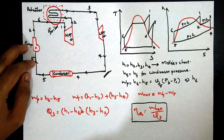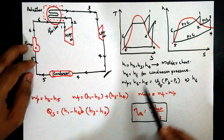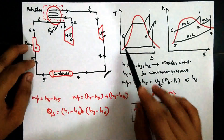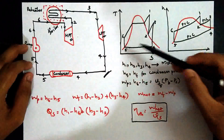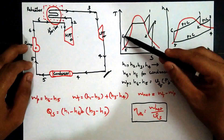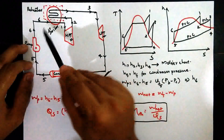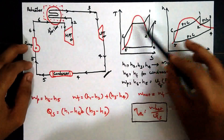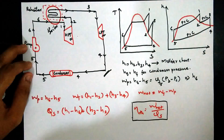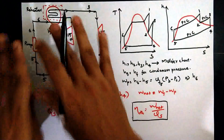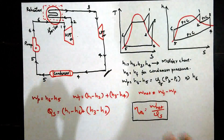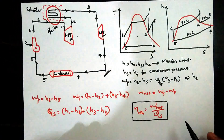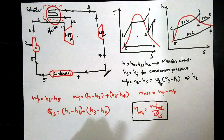Process 4 to 5 is condensation at constant pressure. Process 5 to 6 is isentropic compression in the pump. Process 6 to 1 is heat addition in the boiler at constant pressure. So the reheat cycle has six state points in total.